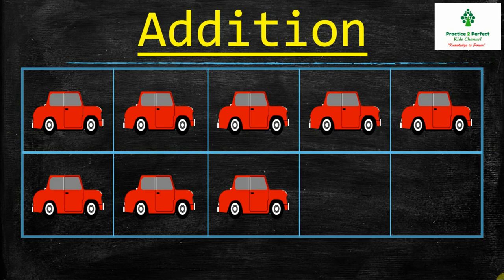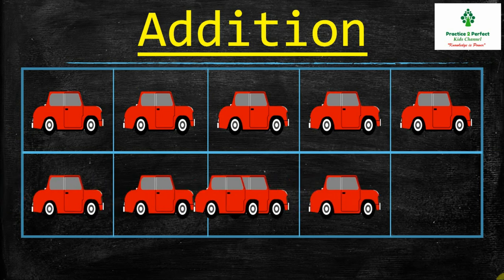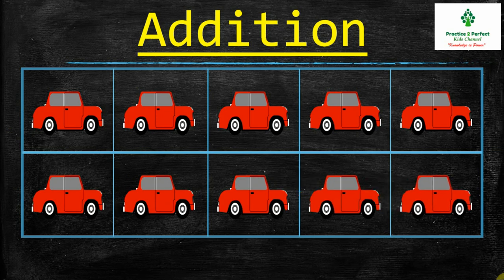If you observe this ten frame, you will see there are 2 blank frames. So if I add 2 more cars here, I get a total of 10 cars. So first I had 8 cars, and now I add 2 more cars. So 8 plus 2 is equal to 10.